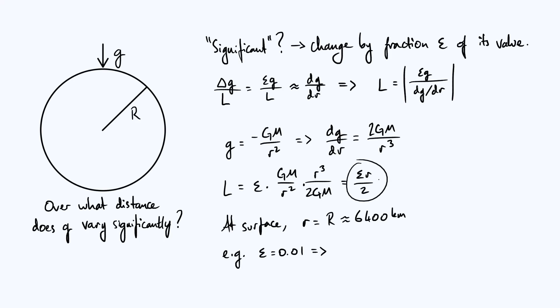So then our formula tells us that we just multiply the distance r by epsilon divided by 2. Multiplying 6400 by 0.01 is just going to give 64, and 64 divided by 2 is 32, and so our length scale is about 32 kilometers.